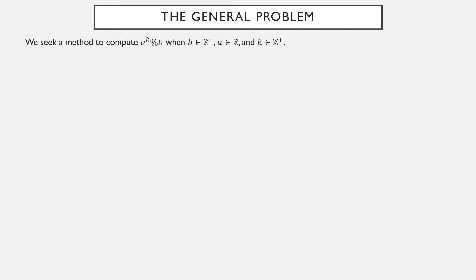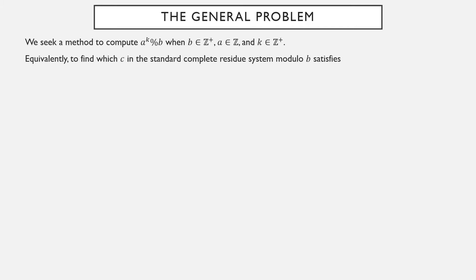Here's the problem we want to learn how to solve quickly and effectively. What's the remainder when a to the k is divided by b? Equivalently, what is an element of the standard complete residue system modulo b satisfying a to the k is equivalent to c modulo b? That will also be the remainder when divided by b.